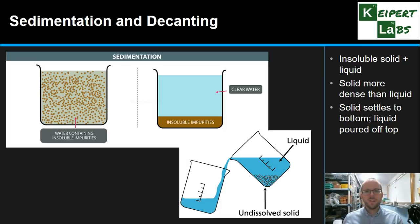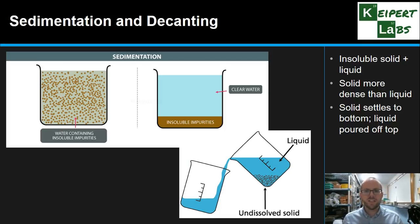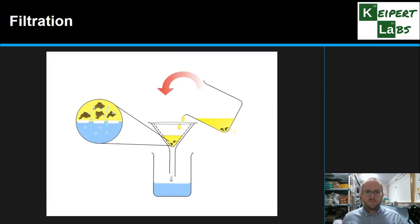This is also quite a common thing to do in everyday life. For example, if you've got a cup of tea with some tea leaves at the bottom, or if you're separating pasta and pasta water, you might choose to pour the water off the top rather than using some other technique. But what happens if the solid doesn't settle out?